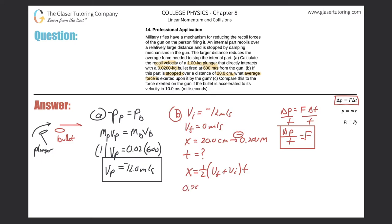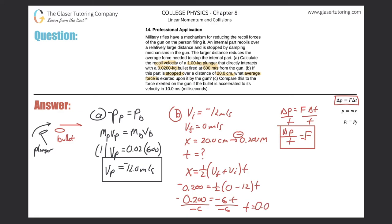Using the formula: displacement equals one half times (final velocity plus initial velocity) times time. Displacement is negative 0.20, final velocity is zero, initial velocity is negative 12, so: negative 0.20 equals one half times negative 12 times time, which gives negative 0.20 equals negative six times time. Dividing out the negative six gives a positive time of 0.0333 seconds. Since time can't be negative, the signs work out correctly.